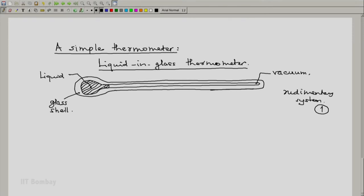Because it is a rudimentary thermodynamic system, the number of properties which are required to define the state of this system is simply one. And what would be that property? That would be the length of the liquid thread in the capillary.